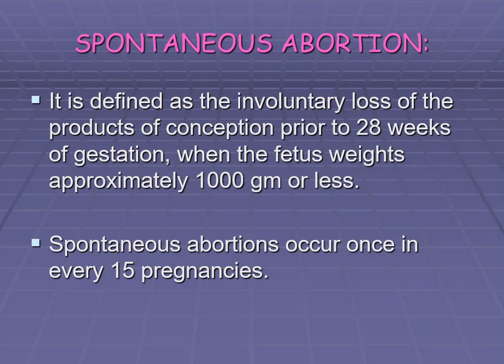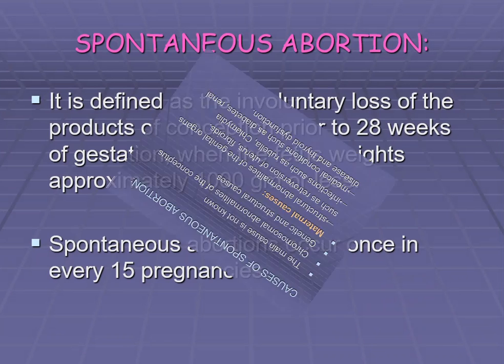Spontaneous abortion is the involuntary loss of products of conception before 28 weeks of gestation, when the fetus is approximately 1000 grams or less. It occurs once in every 15 pregnancies. The causes of spontaneous abortion are mostly chromosomal abnormalities and genetic and structural causes. Under maternal causes: structural abnormalities of the genital organs, infections such as rubella and chlamydia, and medical conditions such as diabetes, renal disease, and thyroid dysfunction.